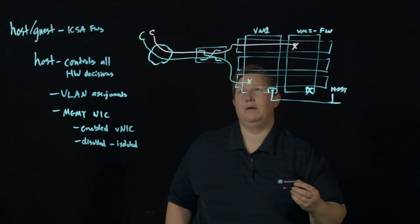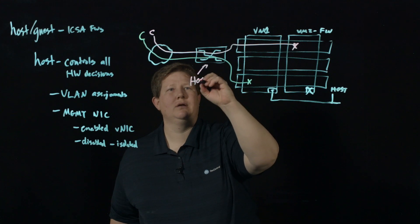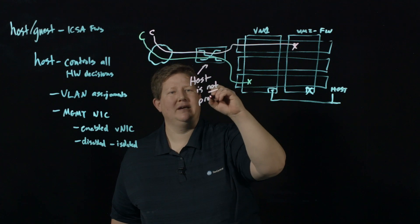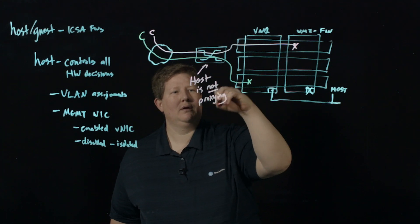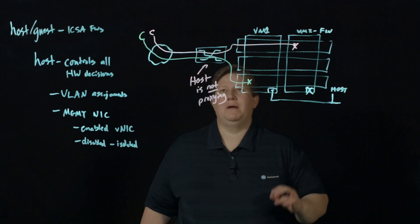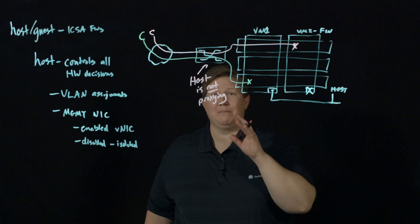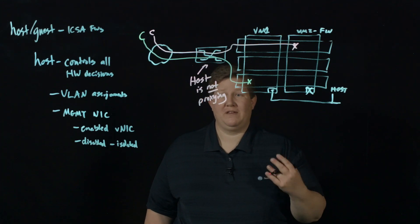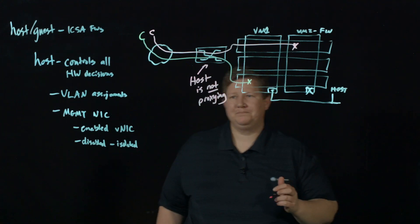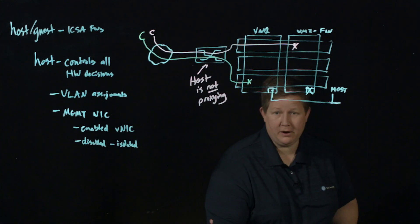That's all controlled from the host. And the other thing to note here is that the host is not proxying this traffic. Big IP, it's a proxy, it's what it does. But in this event, the switch fabric is switching that traffic. It is not proxying that traffic. So the host itself is not aware of that traffic. It's simply proxying it.